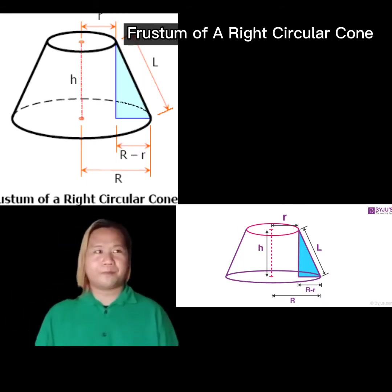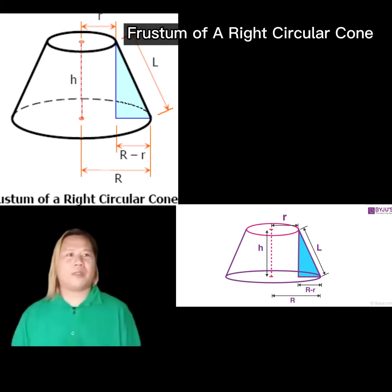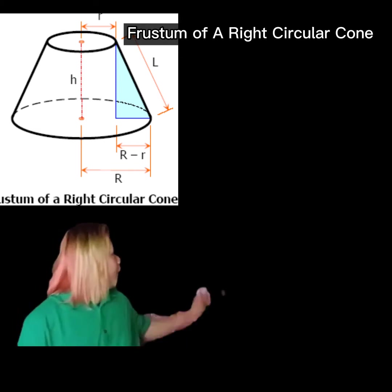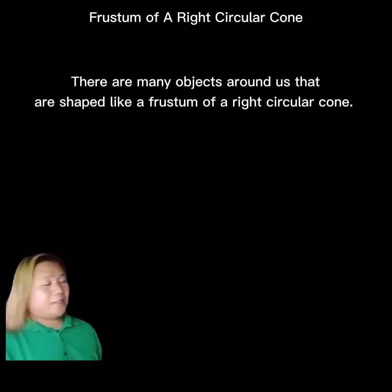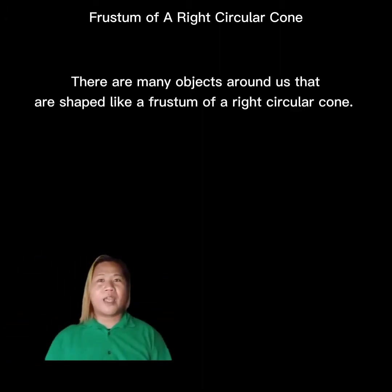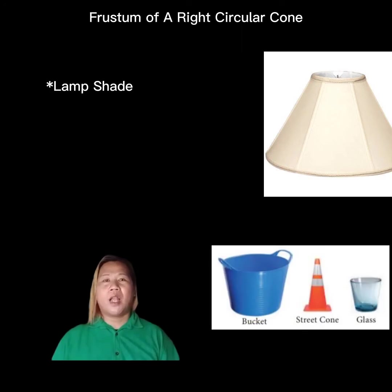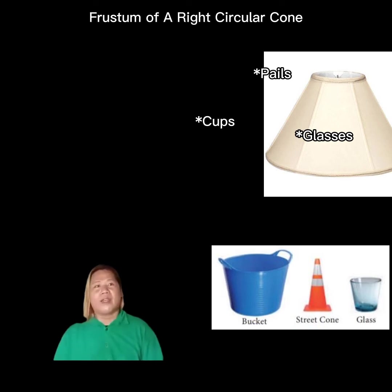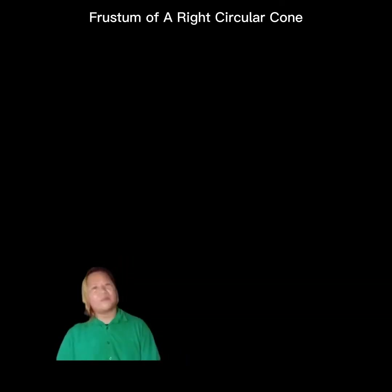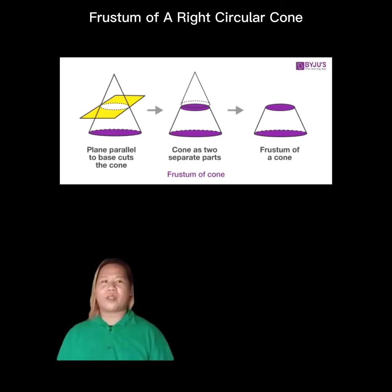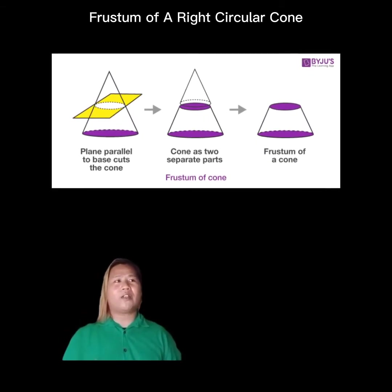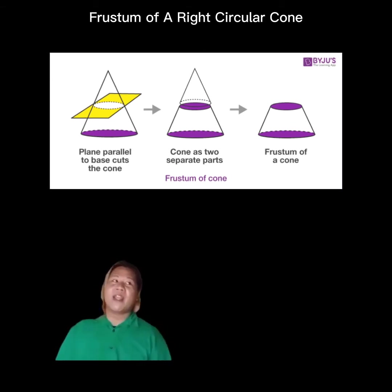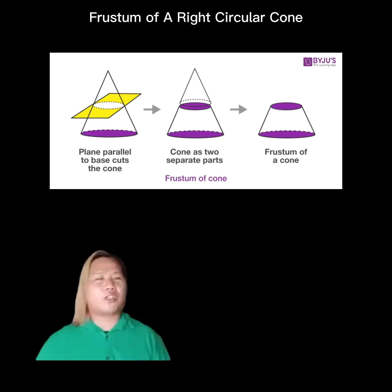Good morning everyone. Our topic today is the frustum of a right circular cone. There are many objects around us shaped like a frustum of a right circular cone — for example, thimbles, statues, pills, cups, glasses, and industrial bearings. When a plane parallel to the base cuts a right circular cone, the portion between the base and the cutting plane is called the frustum of a right circular cone.